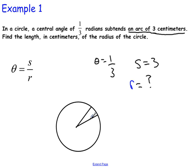And it says that the central angle, so the central angle here is one-third, that one-third represents this angle here. And it says that the arc that it subtends is three centimeters, so that's three centimeters. And we are looking for r. So that's what the scenario looks like.